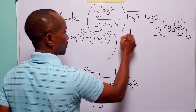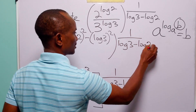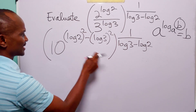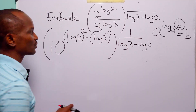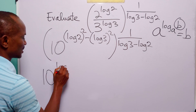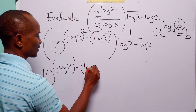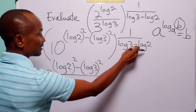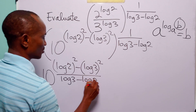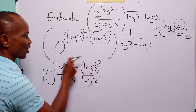We have 10 to the power (log²2 minus log²3), multiplied by the outer exponent 1 over (log 3 minus log 2). To get rid of the bracket we simply multiply these two powers, giving 10 to the power (log²2 minus log²3) divided by (log 3 minus log 2).